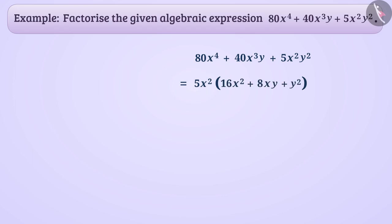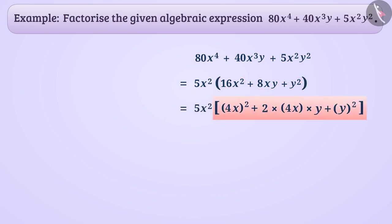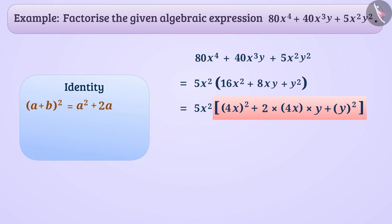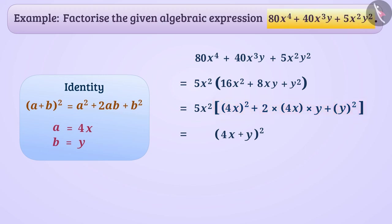Now we can write the terms present inside the bracket like this. The arrangement inside the bracket corresponds to the right side of a plus b, whole square, is equal to a square plus 2ab plus b square. By taking a equal to 4x and b equal to y, we can write the terms inside the bracket as 4x plus y, whole square. In this way, the factorization of the given expression is 5x square into bracket 4x plus y, whole square.